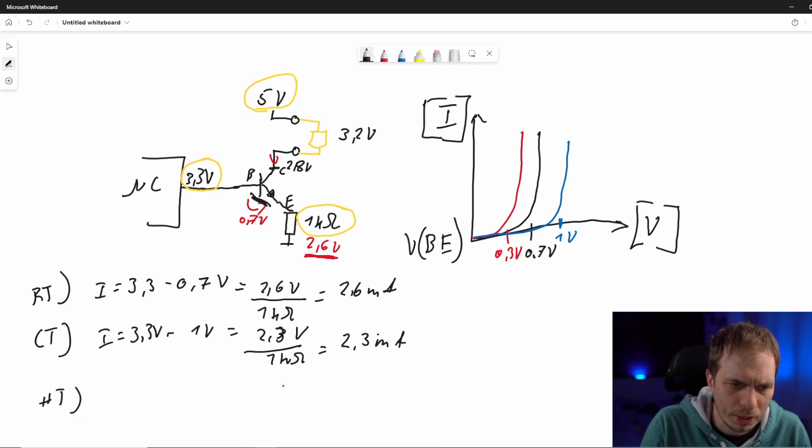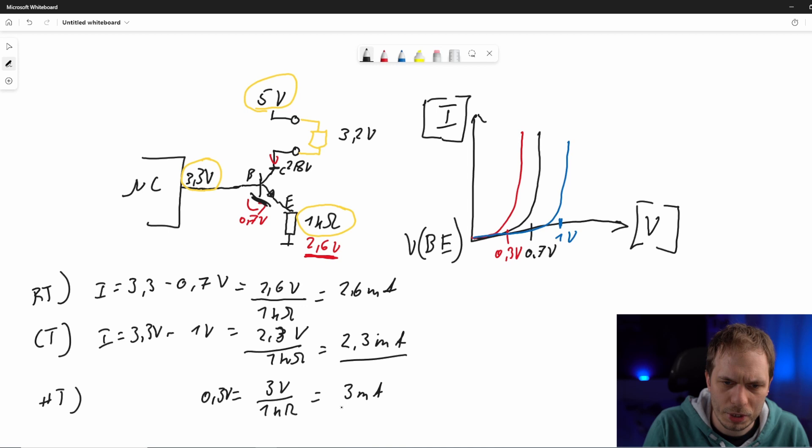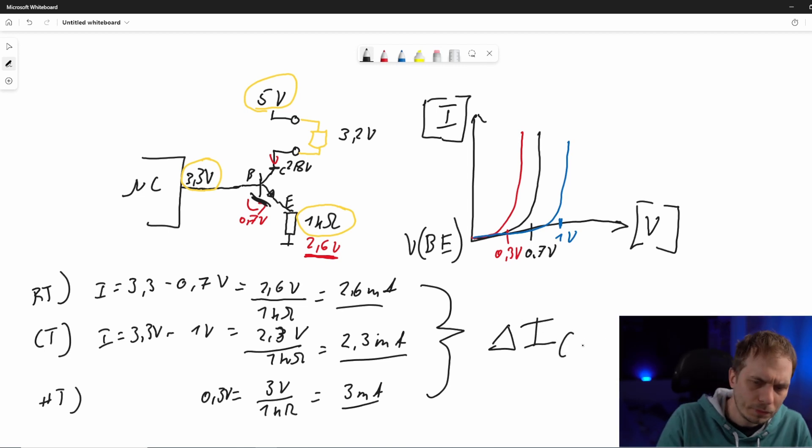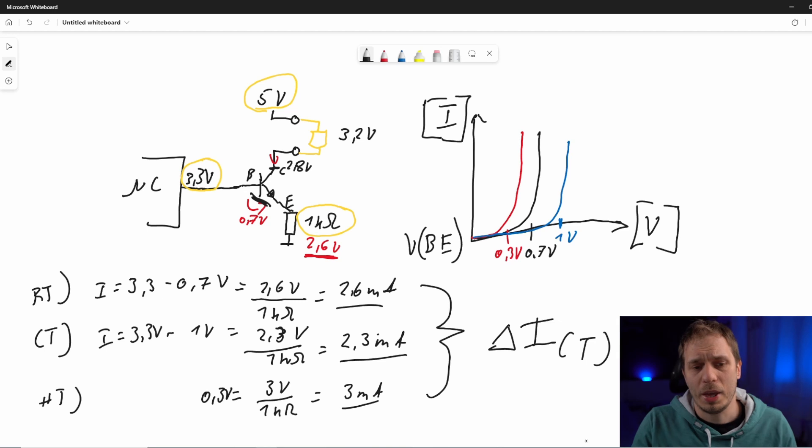For hot temperature, it's the same story and the same calculation. So we get here to 0.3 volts where we said, and that's 3 volts, and 1 kilo-ohm - you know the story already - so it's just 3 milliamps. This is the deviation we will have for our circuit, so it's delta over temperature - delta I from T.